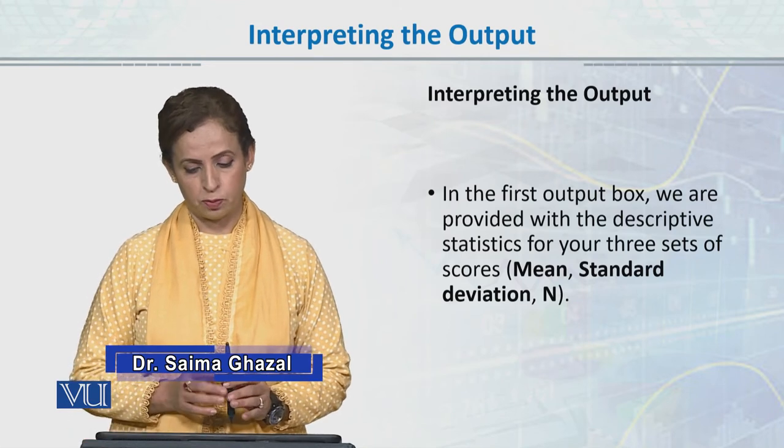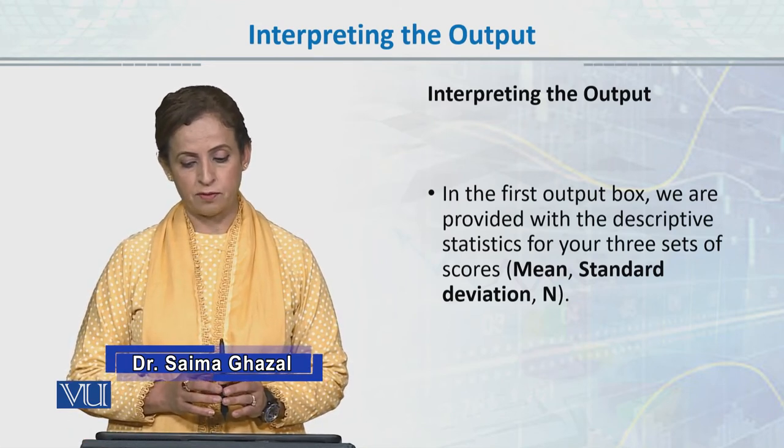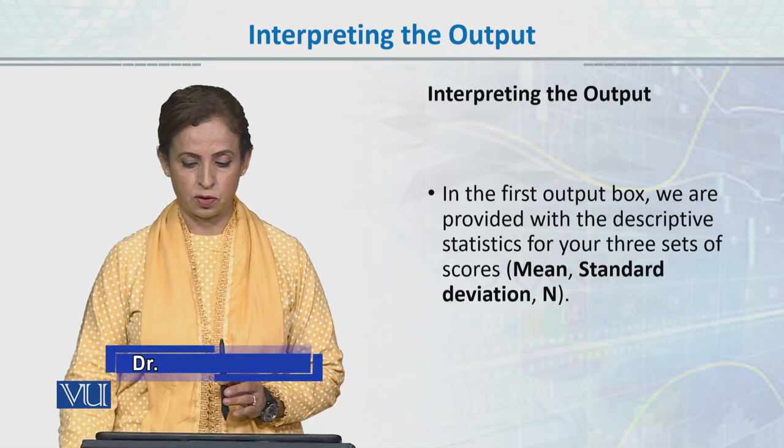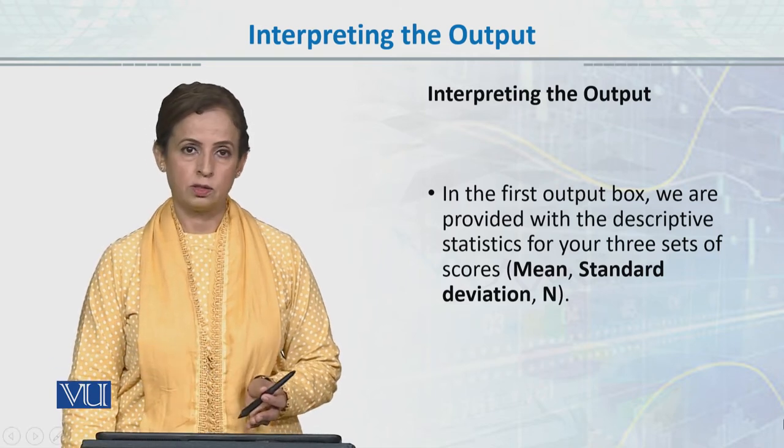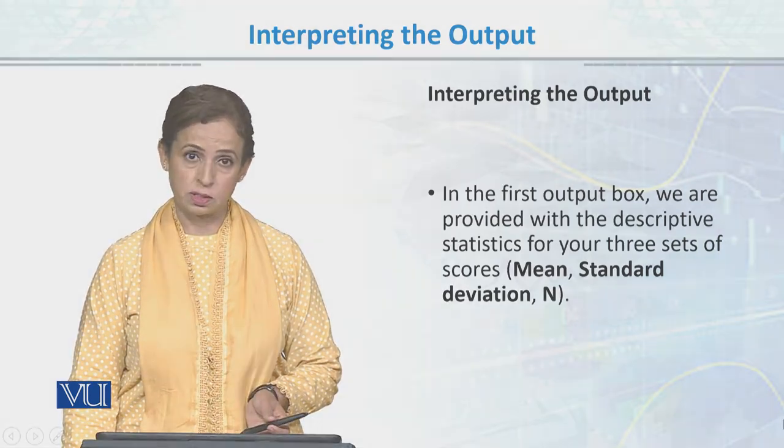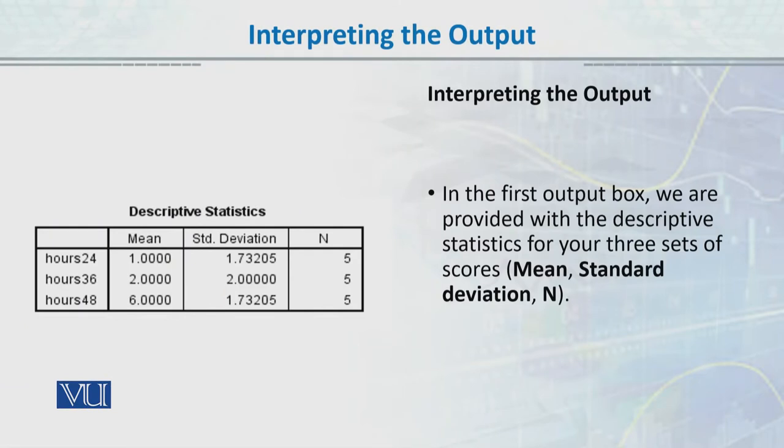In the first output box, we are provided with the descriptive statistics for your three sets of scores, including mean and standard deviation. This is the first box that the output will give: 24 hours has mean and errors, 36 hours has mean and errors with standard deviation, and then for 48 hours it has standard deviations.